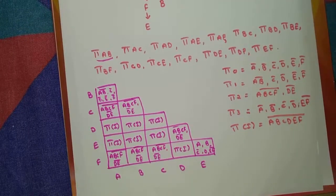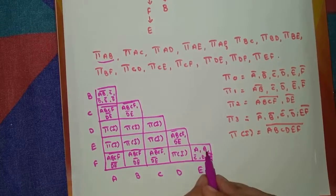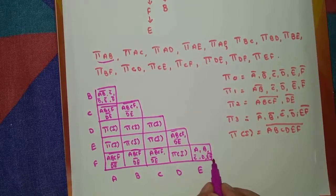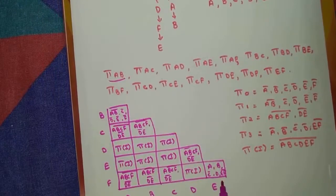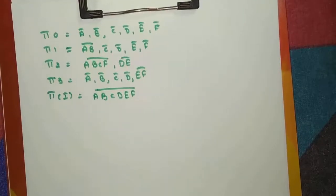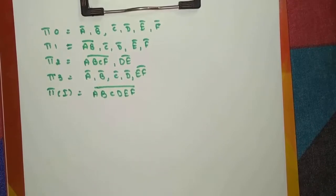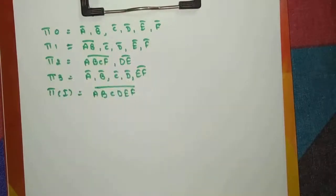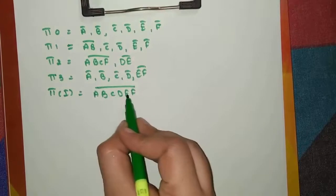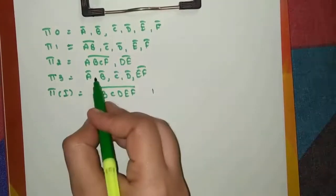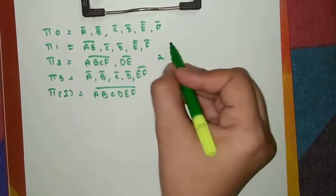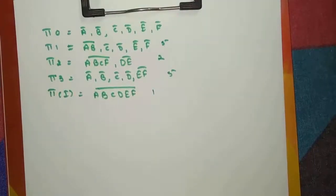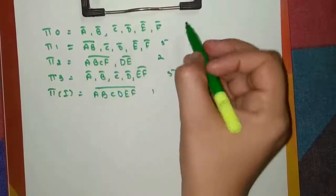I have completed the merger table answers. So this is pi_EF: {A̅ | B̅ | C̅ | D̅ | EF}, which we calculated as pi_3. Now we will draw the pi lattice. These are the partitions we have obtained — from pi_0 to pi_I. Pi_0 has 6 partitions, pi_I has 1, pi_1 has 5, pi_2 has 2, and pi_3 also has 5.